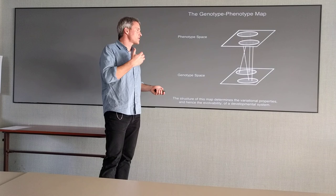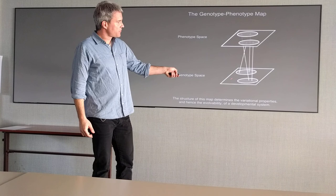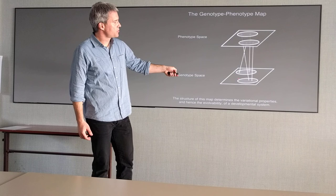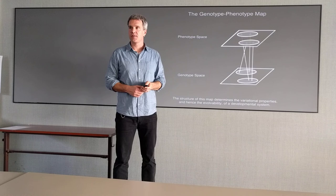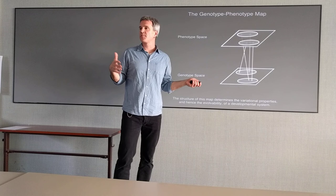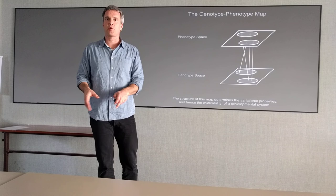If you have a model of this map, you understand what kind of variability can be produced in a population for selection and evolution to work on. The way that quantitative genetics traditionally goes about this is mapping statistically. You sample a lot of genotypes, sample a lot of phenotypes, and create some statistical correlation. That's not what we want to do. We want a mechanistic causal explanation.